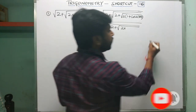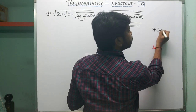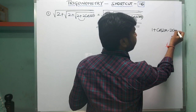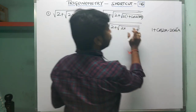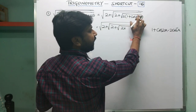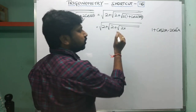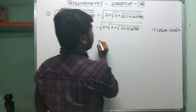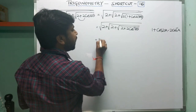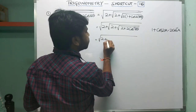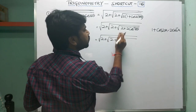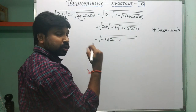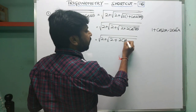The identity 1 plus cos(2a) can be written as 2cos²(a). So here, 1 plus cos(2×8θ) becomes 2cos²(8θ). This can be written as square root of 2 plus square root of 2 plus square root of 2 into 2cos²(8θ). Taking the 2 outside the square root, cos²(8θ) becomes cos(8θ).